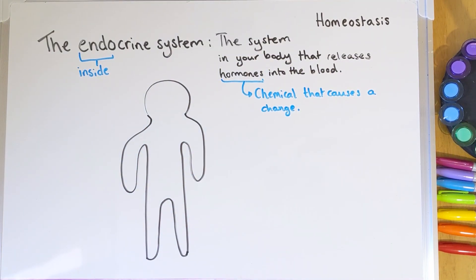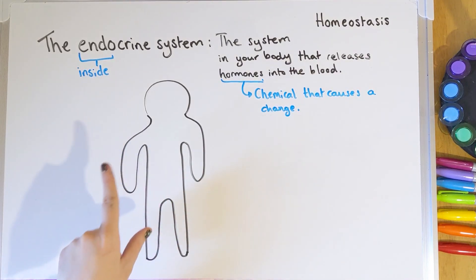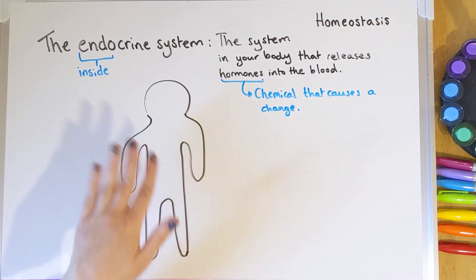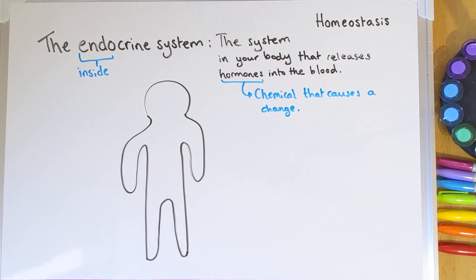Draw yourself a stick person — you can make yours have big broad shoulders like mine if you wish, or more beautiful. What we're going to do now is put in all of the different endocrine glands and parts that you need to know for your GCSEs. We're going to start at the top and work our way down. Our first gland is the pituitary gland, which is found just inside your brain.